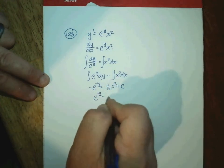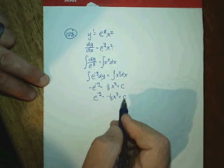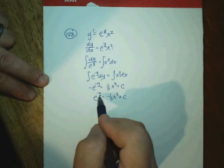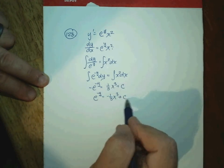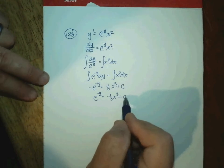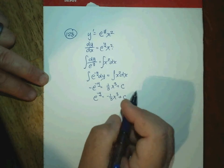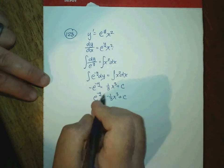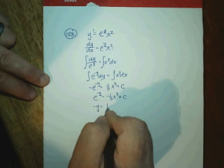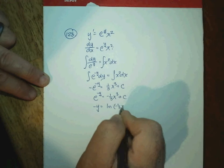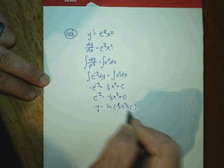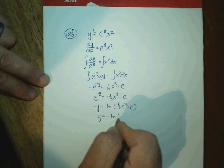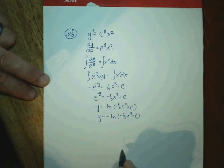When multiplying through by a negative, just let the constant C absorb the negative — it's an arbitrary constant, so don't worry about it. Now, to get rid of the exponential and isolate y, take the natural log of both sides. Taking the natural log of e^(−y) gives −y. Then multiply both sides by −1 to solve for y explicitly.